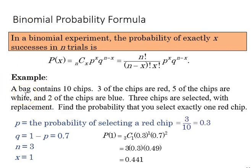Here's an example. We have a bag with ten chips, three are red, five are white, two are blue, three chips are selected, and it's with replacement. Remember we have to have equal probability with each independent trial, and if we keep any chips out of the bag we're changing the probability as we repeat trials. So that's an important point.